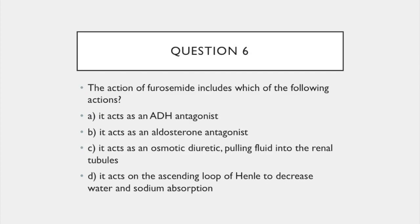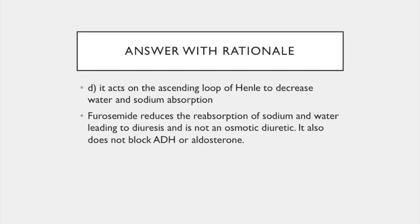Question 6. The action of furosemide includes which of the following? A. It acts as an ADH antagonist. B. It acts as an aldosterone antagonist. C. It acts as an osmotic diuretic pulling fluid into the renal tubules. D. It acts on the ascending loop of Henle to decrease water and sodium absorption. The answer is D. Furosemide reduces the reabsorption of sodium and water, thus leading to diuresis, and is not an osmotic diuretic. It also does not block ADH or aldosterone.